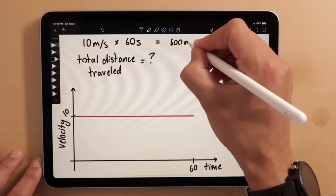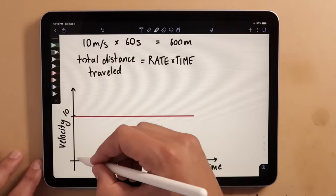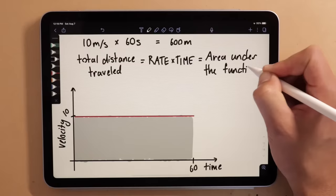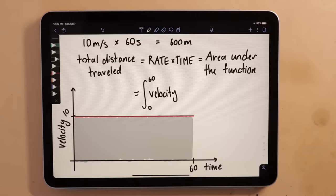But notice something else. Rate times time is also the area of this rectangle, or the area underneath the velocity function. The total distance traveled is the area underneath the curve. Another way to write this is that the integral of velocity from time 0 to time 1 is the total distance traveled over that time period, or the area underneath the curve.